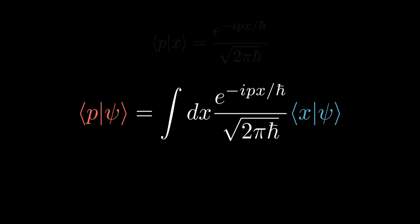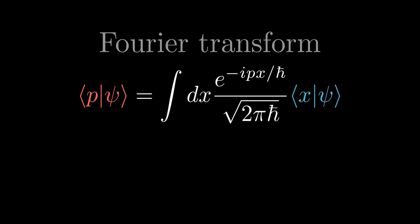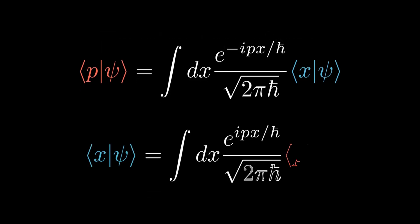Hence, the momentum basis wave function is just the Fourier transform of position basis wave function. Same argument also yields that the position basis is the inverse transform of momentum basis wave function.